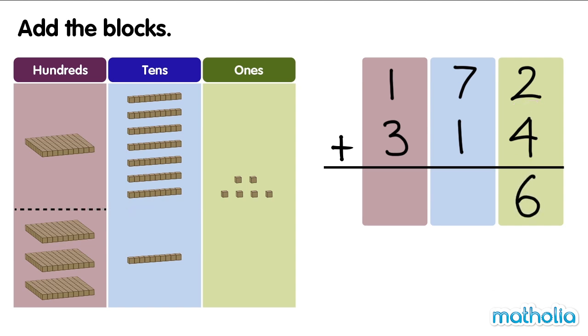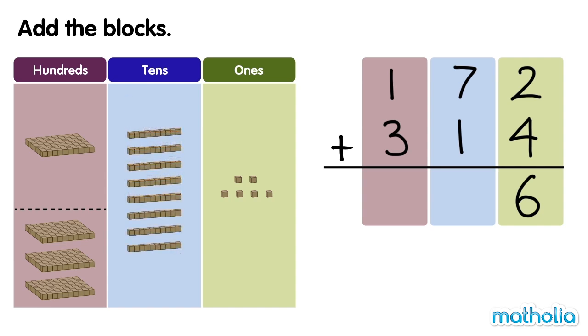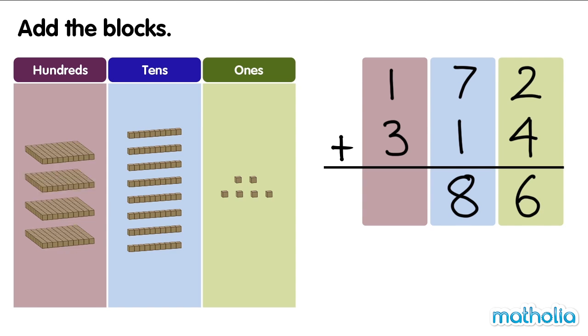Next, add the 10s. 7 10s plus 1 10 equals 8 10s. Finally, we add the 100s. 100 plus 300 equals 400. There are 486 blocks. 172 plus 314 equals 486.